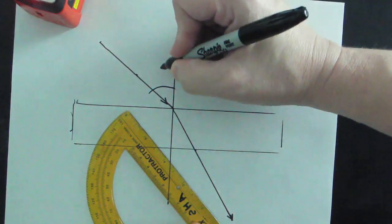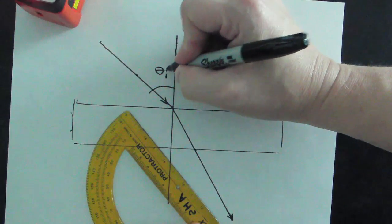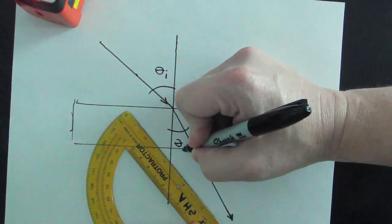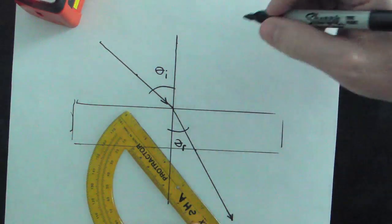This becomes the incident light ray. And over here, this angle is going to become the refracted light ray.